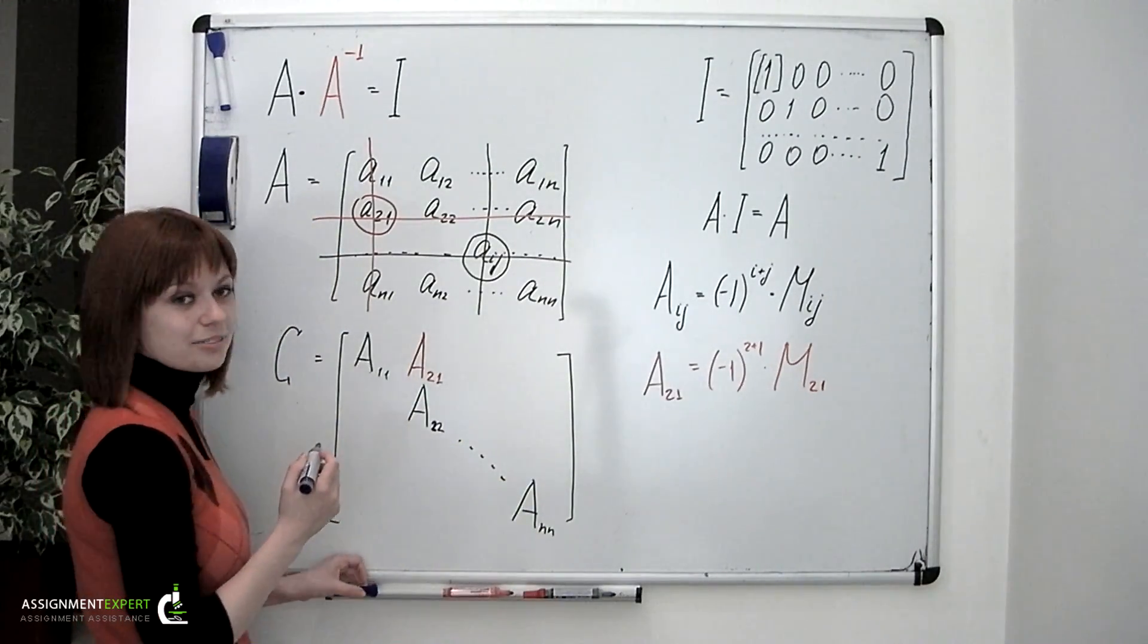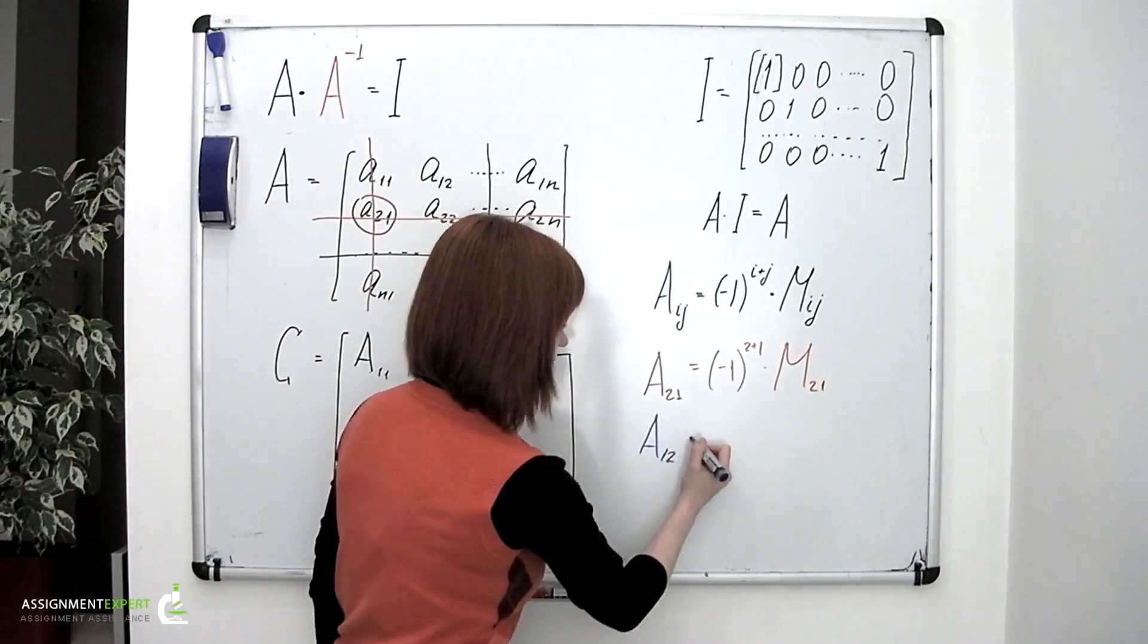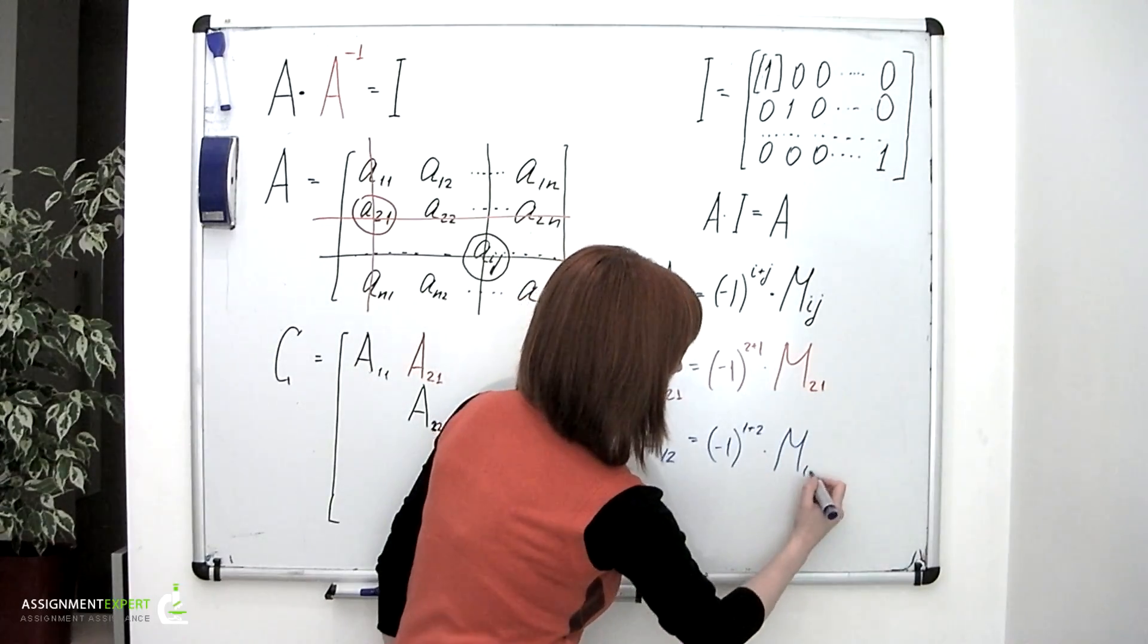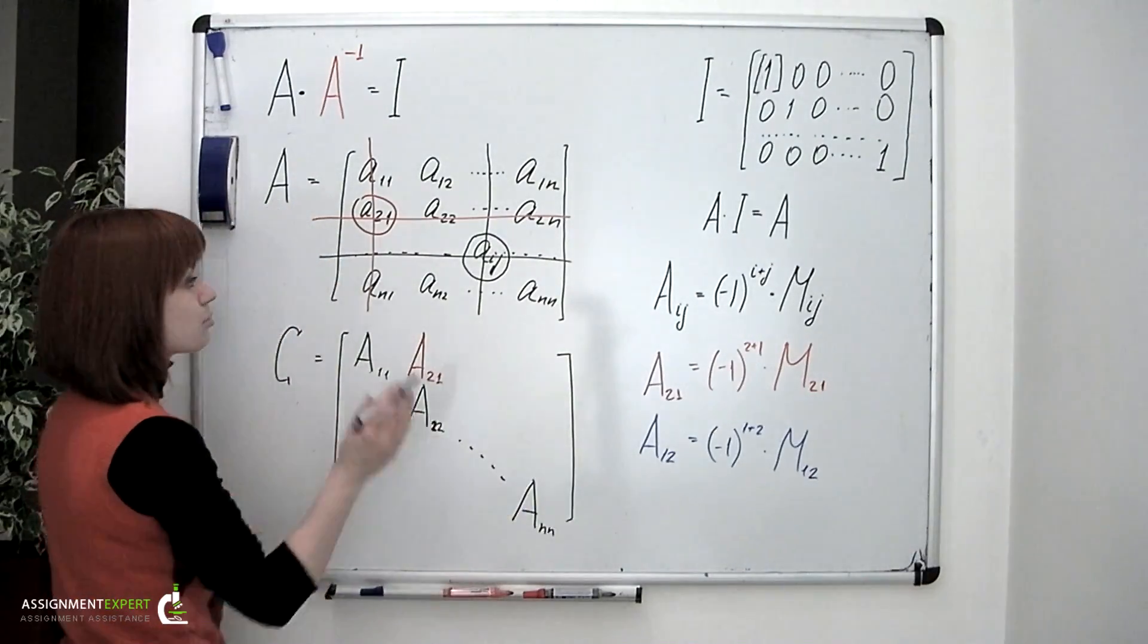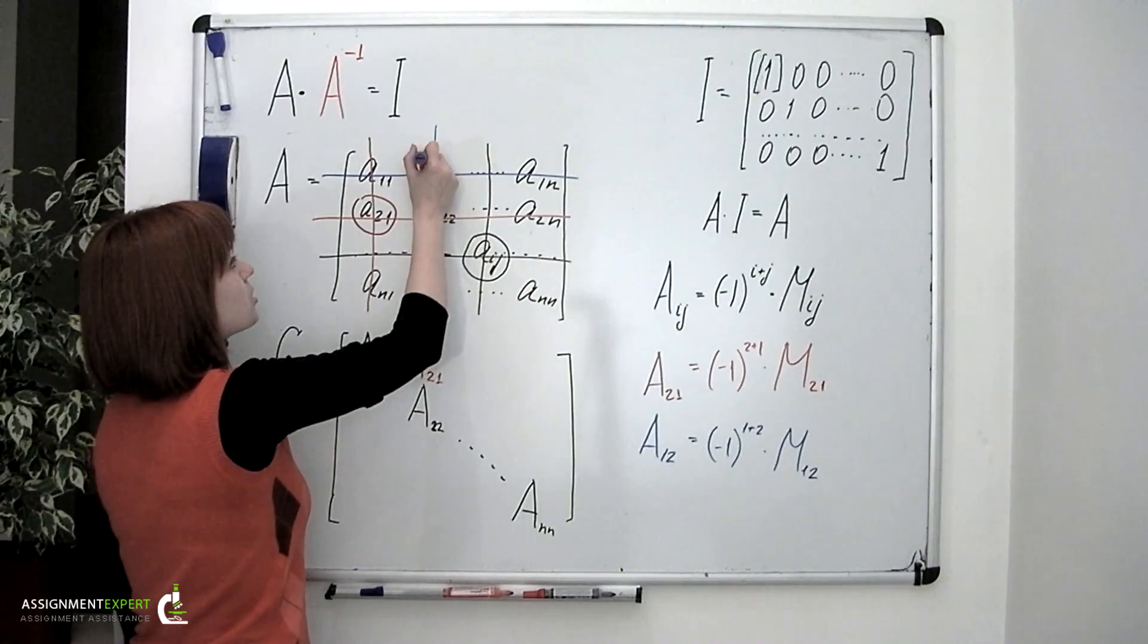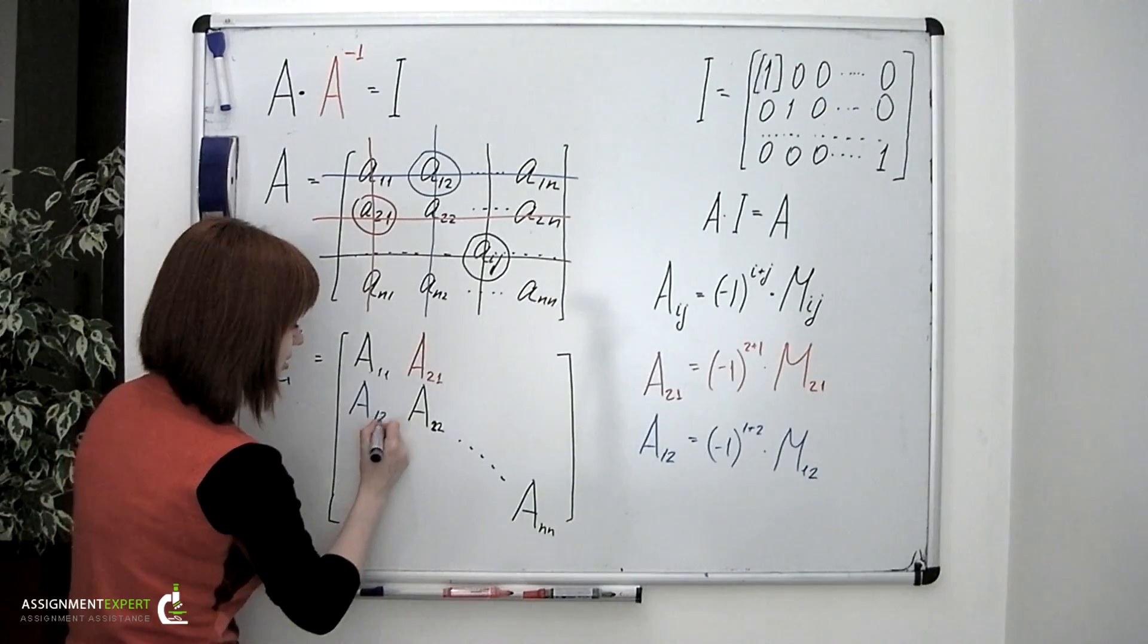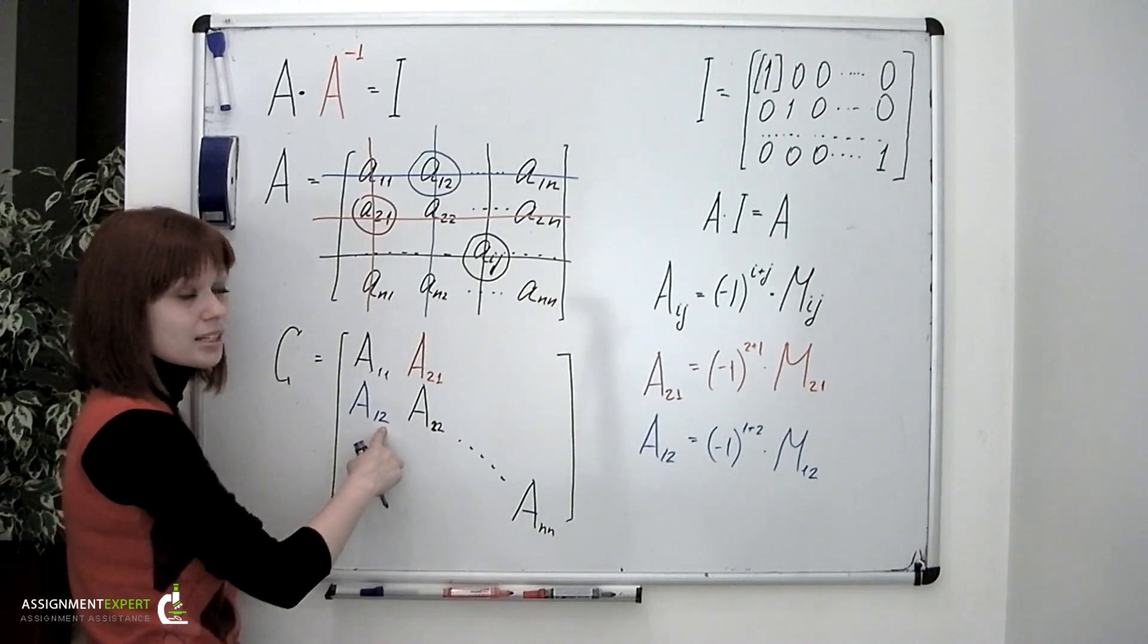Now let's do that again. Say you want to calculate the element number 1,2. And again, according to this formula right here, you'd go negative 1 taken to the power of 1 plus 2 multiplied by the minor M_12, which is the determinant of the matrix obtained from the initial one by removing the first row and the second column. So it is the minor to this element. And again, instead of placing it right here, we're placing it right here, A_12. And again, we can see that the first number in the index stands for the number of the column and the second stands for the number of the row.